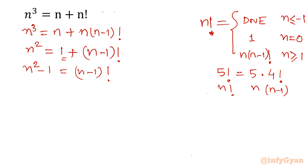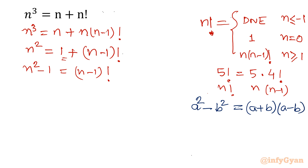We know the difference of squares formula: a squared minus b squared equals (a+b)(a-b). Applying this, n squared minus 1 squared gives us (n+1)(n-1) equal to (n-1) factorial.